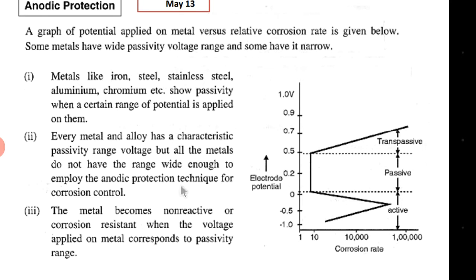The metal is forced to behave as an anode. How it behaves as an anode: we can apply an external potential to the metal. If you apply the potential in the passive range, the metal stops reacting to the environment. Metals like iron, steel, stainless steel, and aluminum show passivity when a certain range of potential is applied on them.